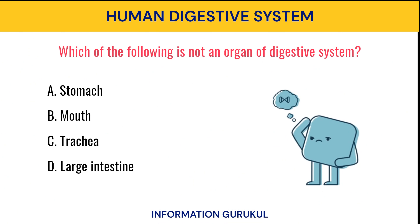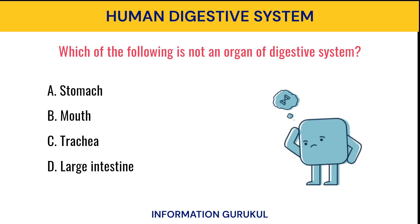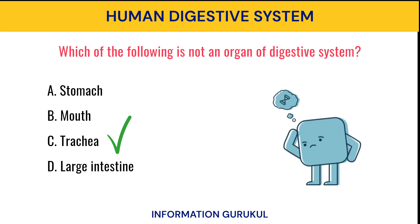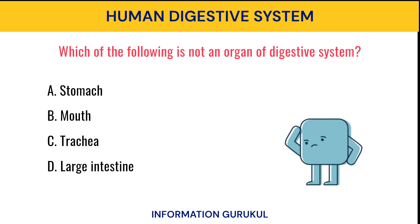Which of the following is not an organ of the digestive system? Trachea.